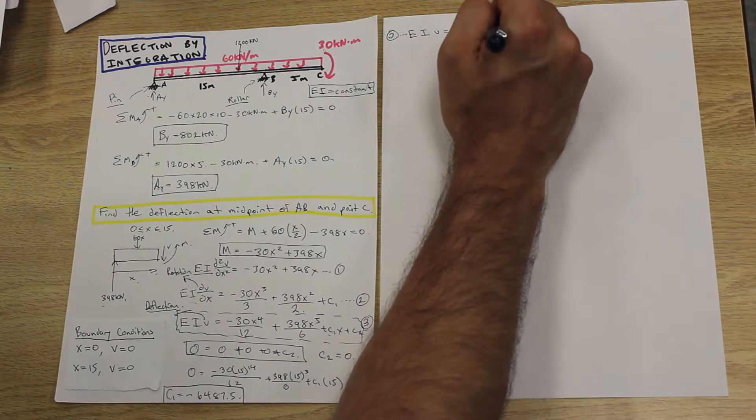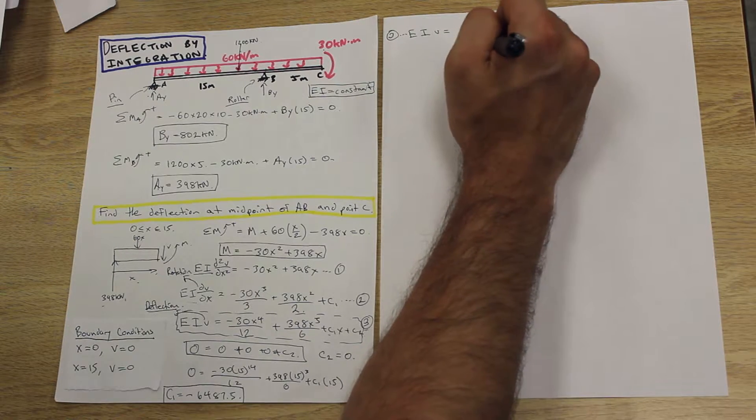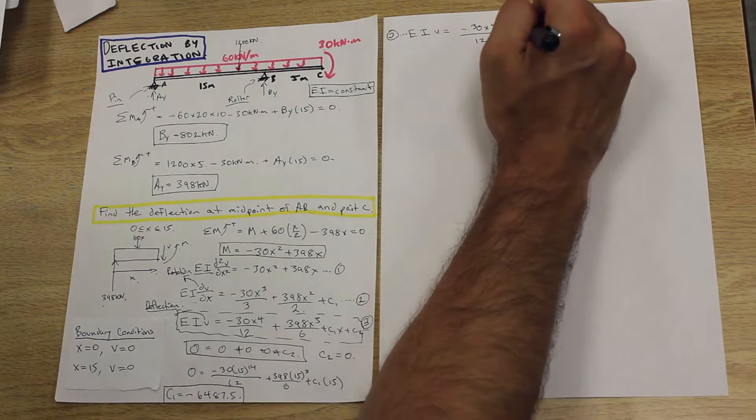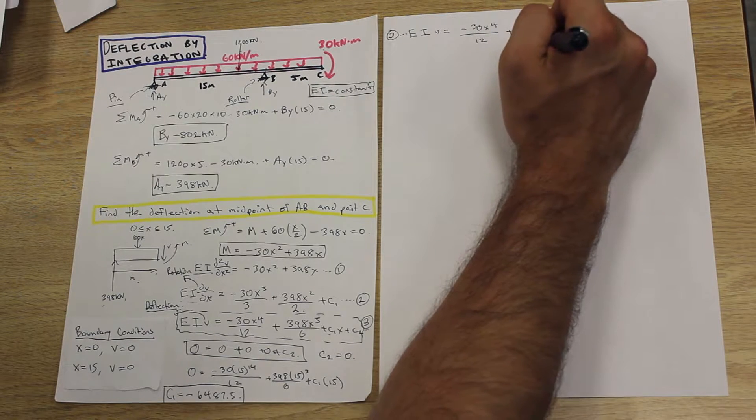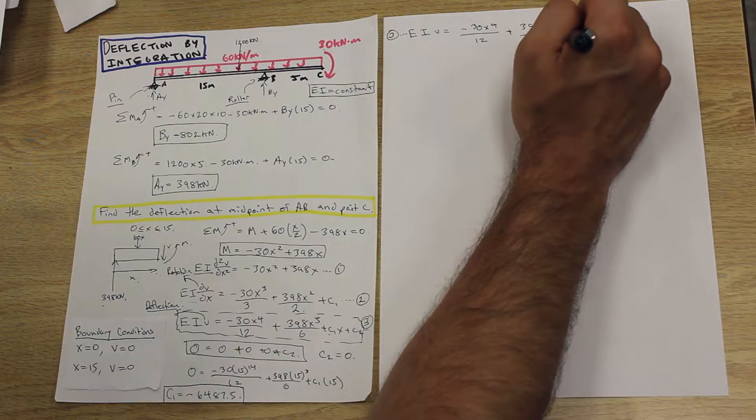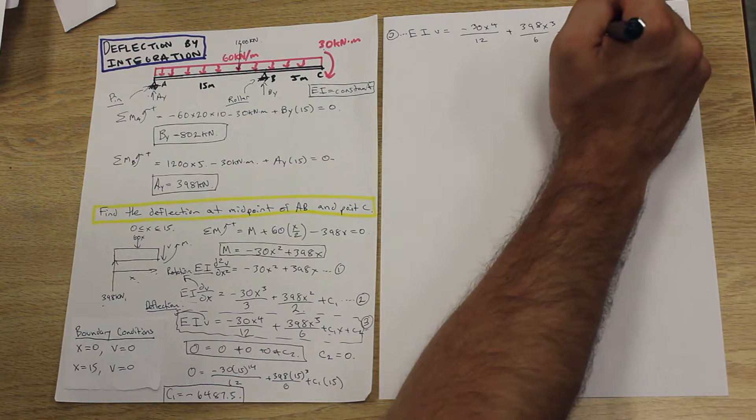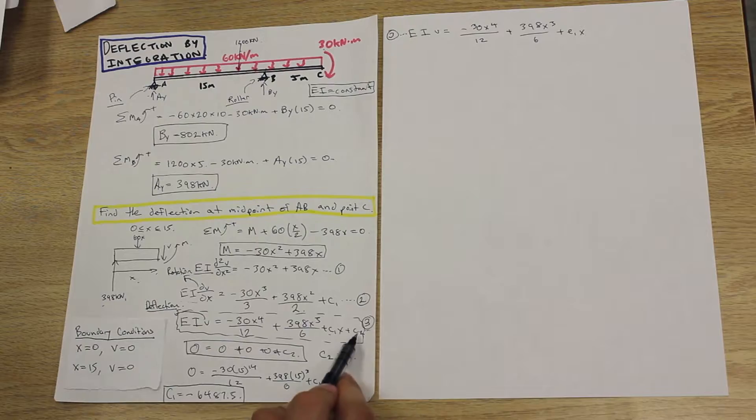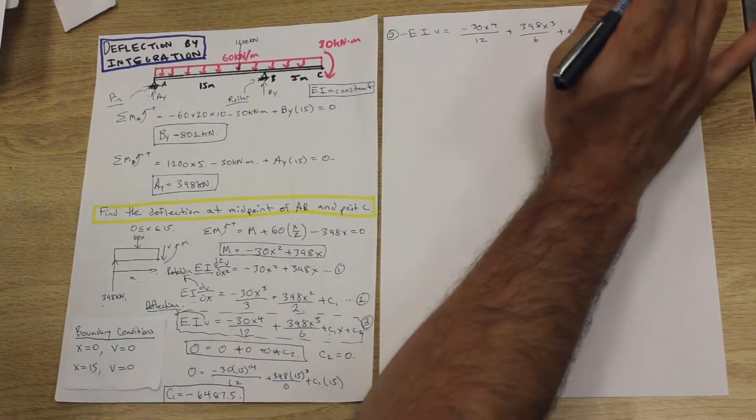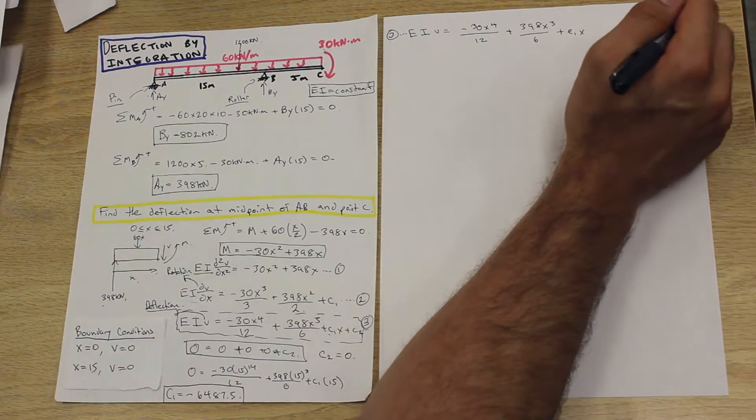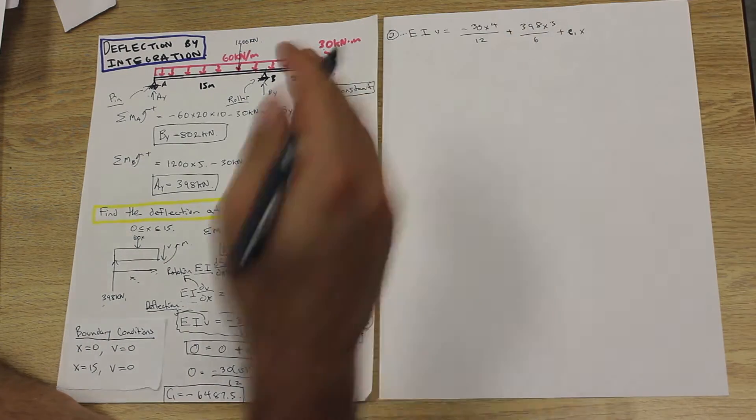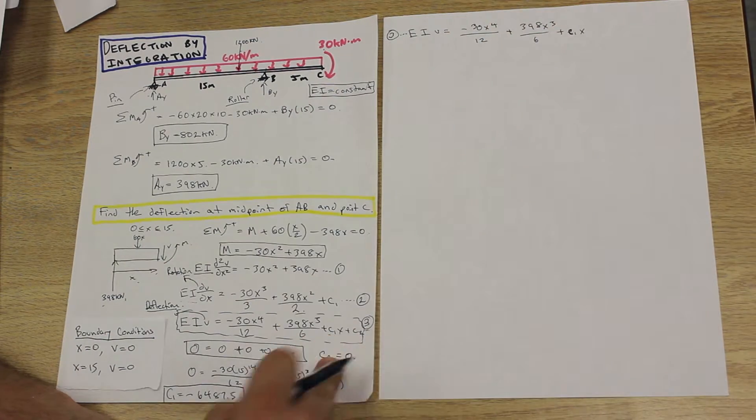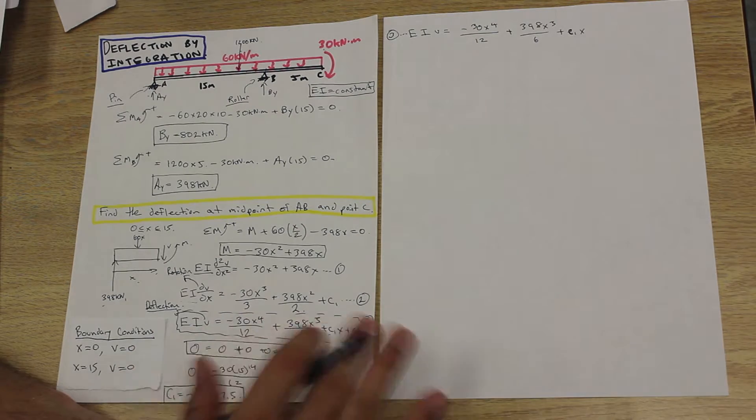Negative 30x to the 4 over 12 plus 398x cubed over 6, plus C1x, and C2 is 0. So I'm not even gonna write C2, because we already went over that in the last video. If you're unsure of why C2 is 0, go back and just look over that again.